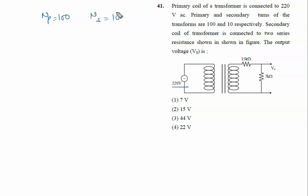Definitely voltage will be down. The secondary coil of the transformer is connected to series resistance shown in the figure. What is the output voltage across the device? First of all, you will get the EMF produced in the secondary coil.